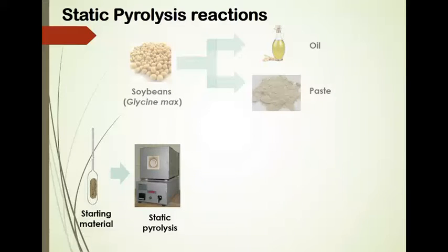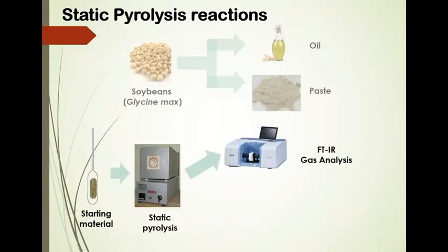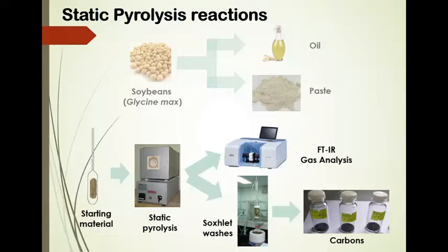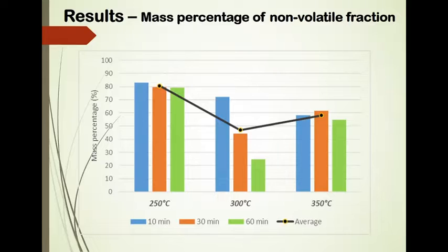After the reaction is complete, the ampoule is opened and the gas analysis is performed using infrared spectroscopy. The remaining fraction, composed of carbonaceous solids impregnated with solvent substance, is washed with acetonitrile and ethanol using a Soxhlet apparatus. The solid is then dried and ready for the next stage. This mass recovery corresponds to what we call non-volatile fraction, which is made up of the carbonaceous solid and soluble products.